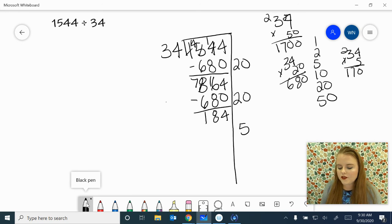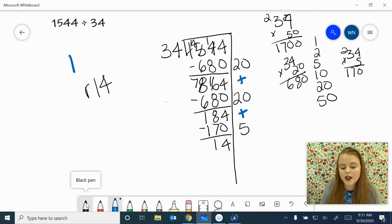So my friendly number is 5, and I've got 170. 4 minus 0 is 4. 8 minus 7 is 1. So I know I have a remainder of 14. Let's go ahead and add up our friendly numbers. 20 plus 20 is 40, plus 5 is 45. 45, remainder 14.